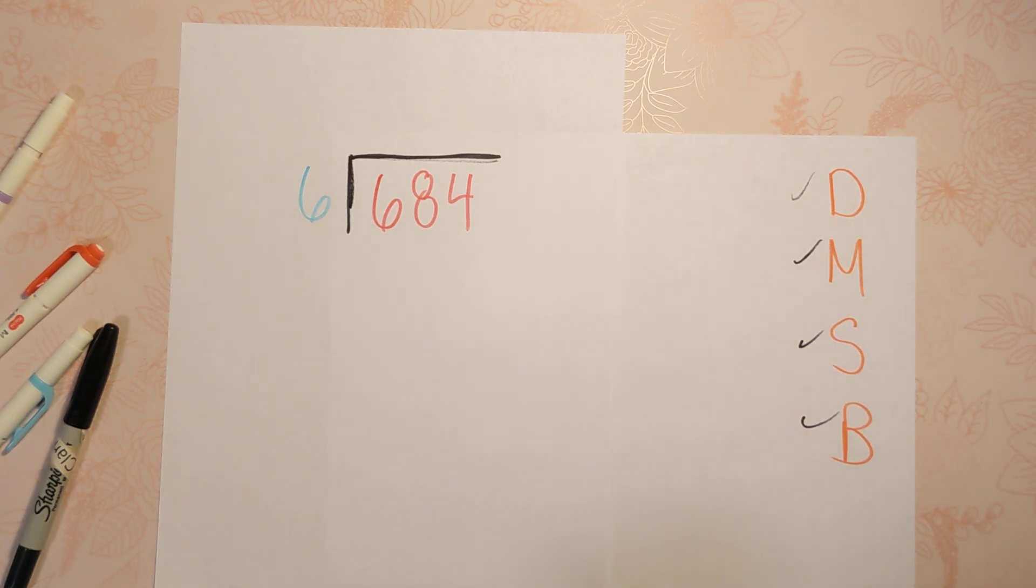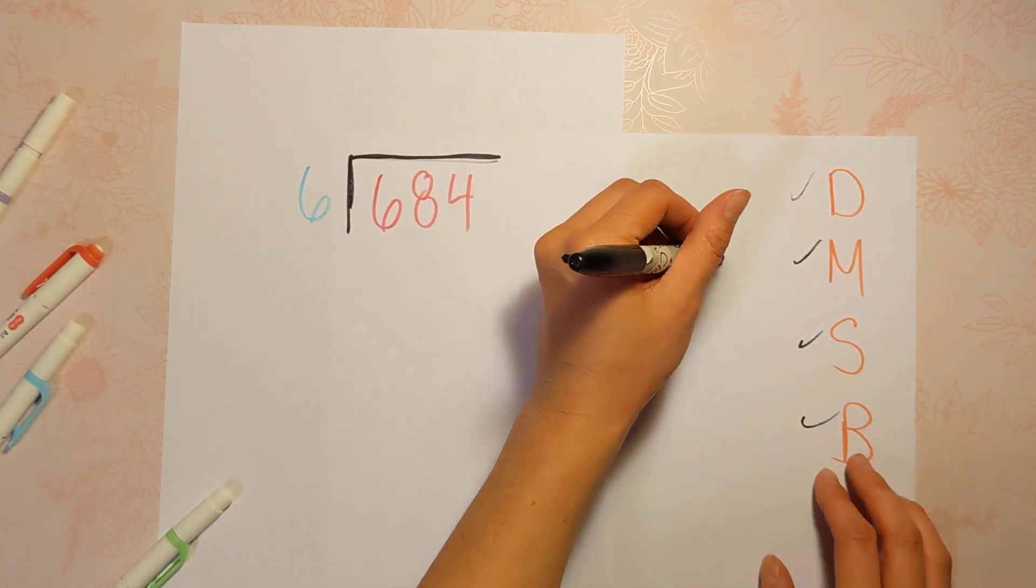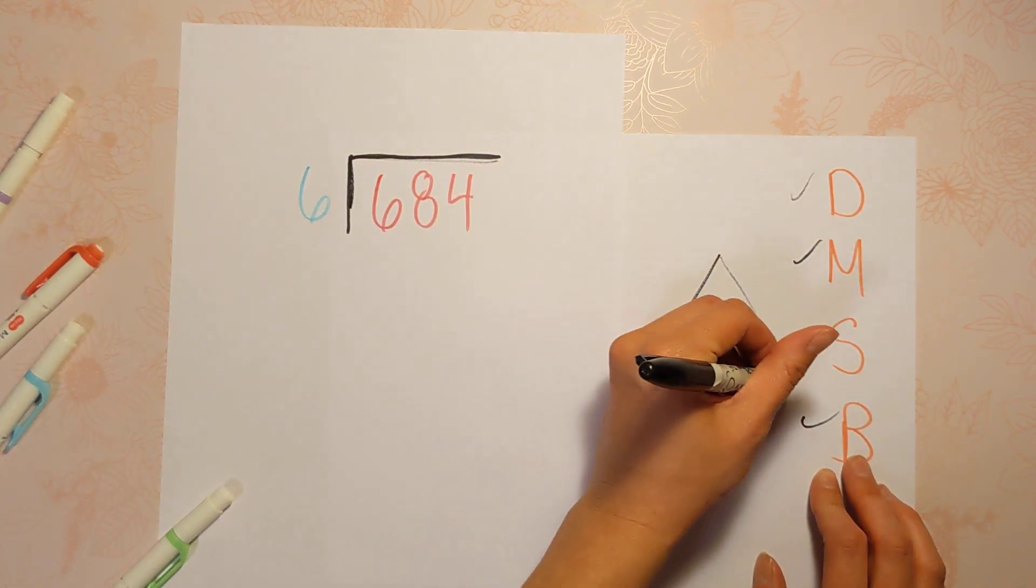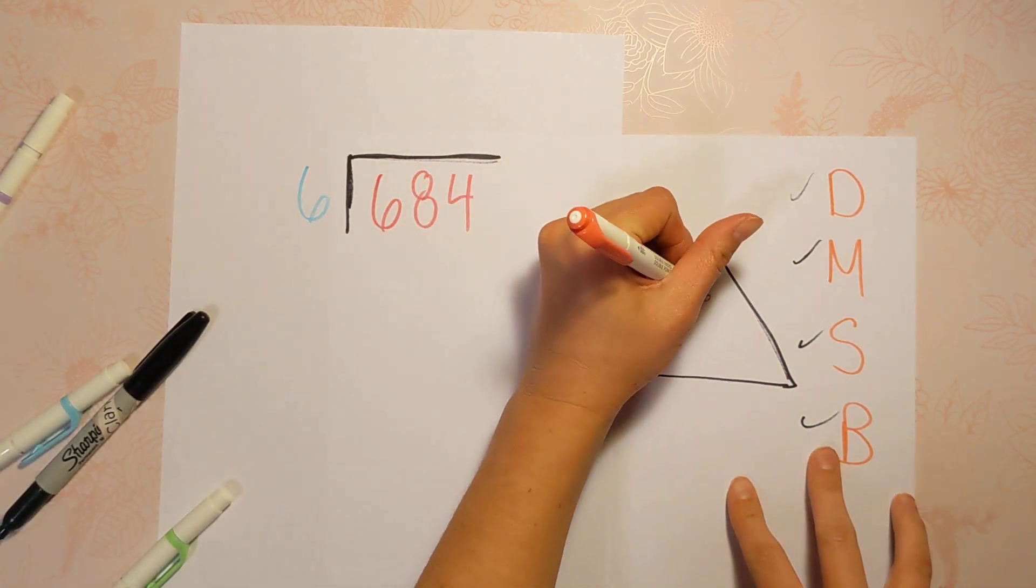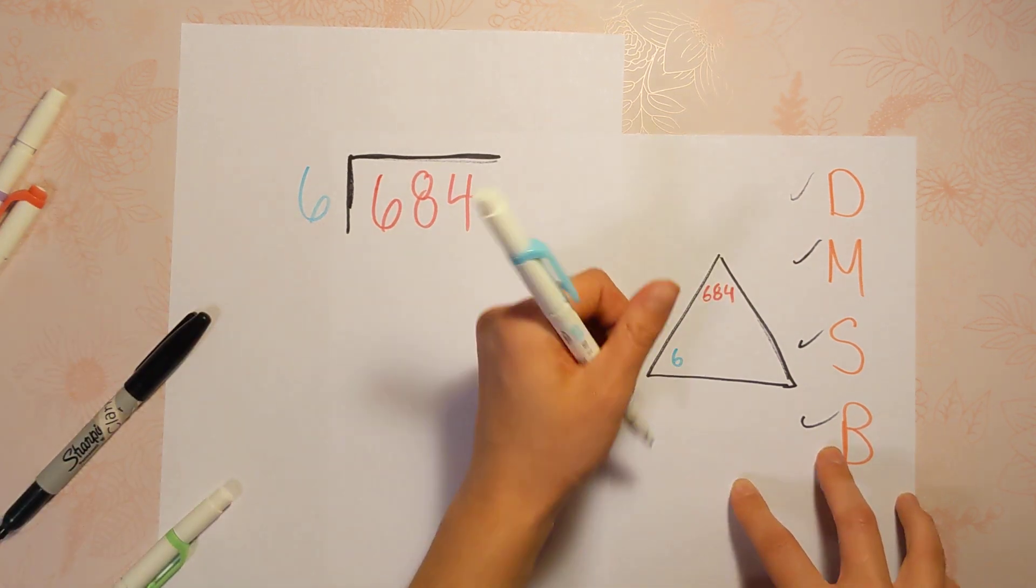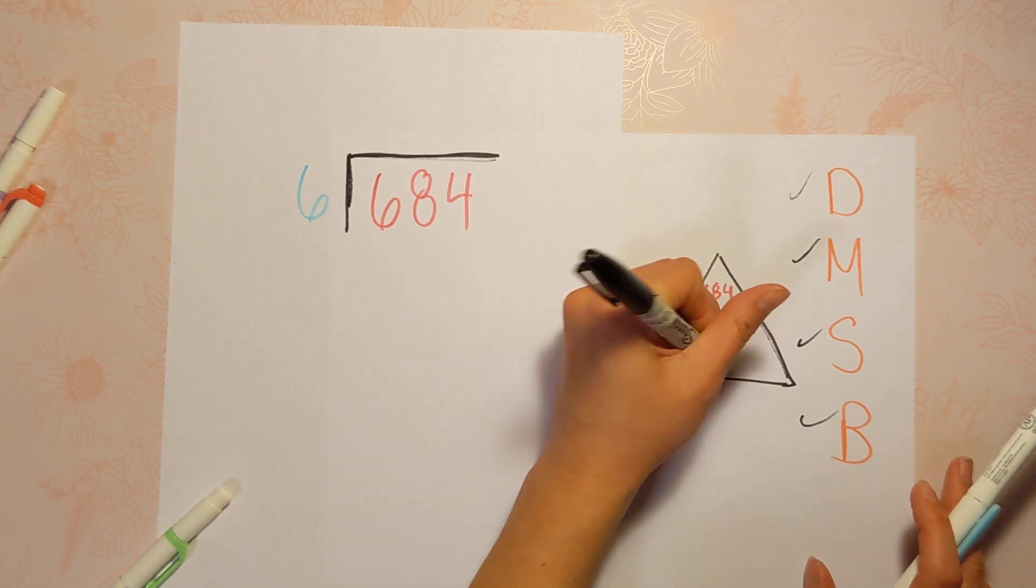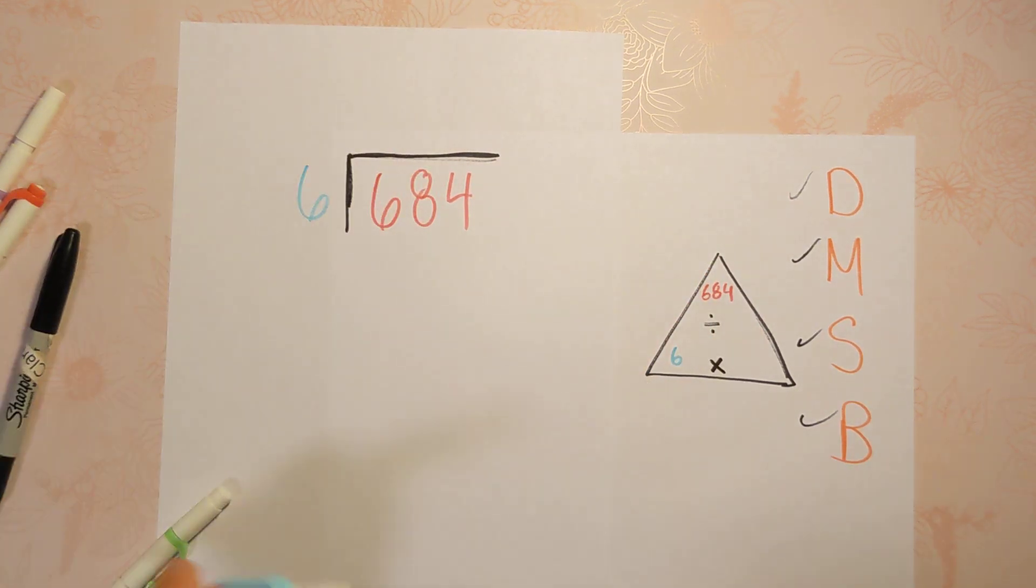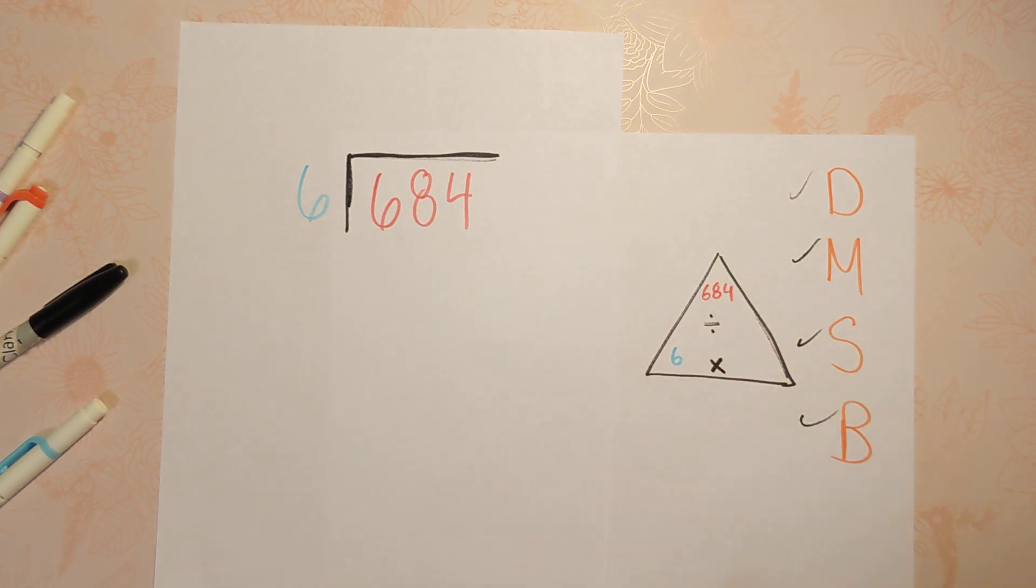This is the standard algorithm, and I always like to draw myself a fact triangle just so I can really see what it is I'm doing. I'm taking this number 684, and I'm dividing it by six. As you know, division and multiplication are related, so we are going to be multiplying a lot, because we're really trying to figure out six times what will get us up to 684.